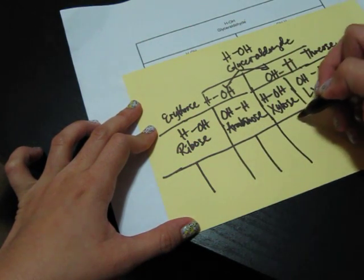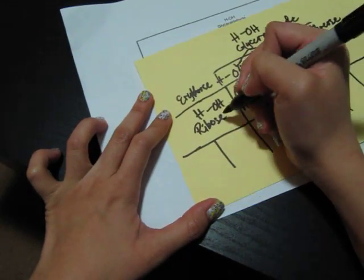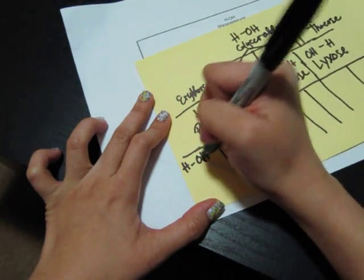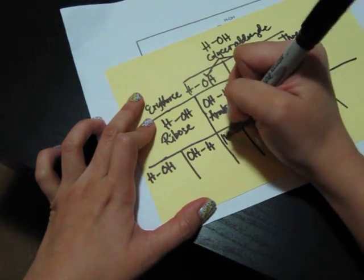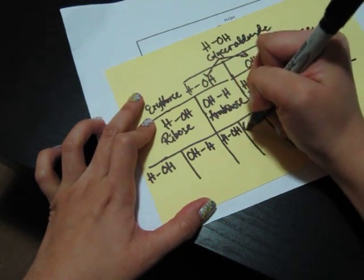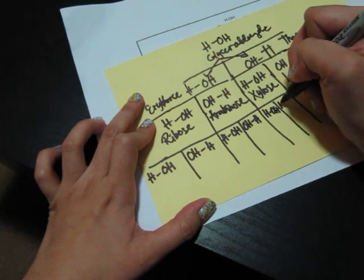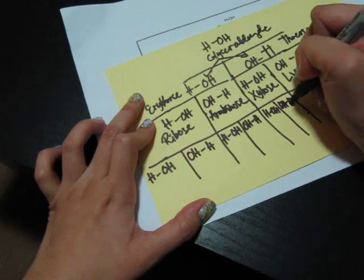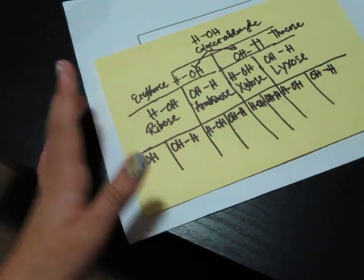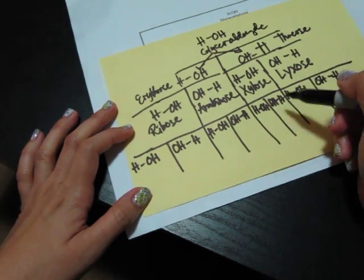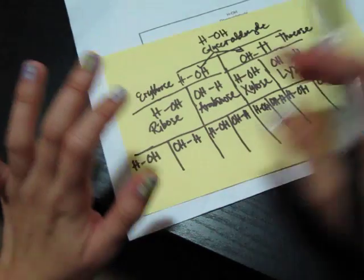Arabinose here, xylose first — they're threose — and lyxose last. So ribose divides into two, arabinose divides into two, xylose divides into two, lyxose divides into two. Start with the HOH pattern first, then OHH, then HOH, then OHH — HOH, HOH, HOH, HOH — and then another OHH.